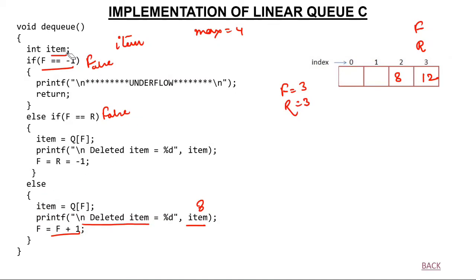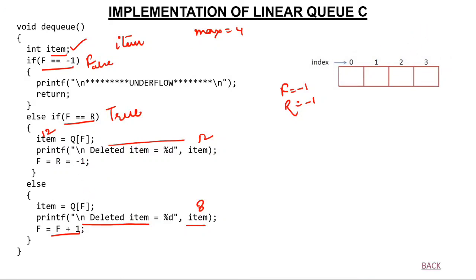Pressing 2 again: front is not minus 1. Now front equals rear — both are 3 — meaning only one element is left. Item gets Q[3] = 12; printed. Since it was the last element, both front and rear are reset to minus 1. Pressing 2 once more: front is now minus 1, condition is true — we print 'underflow: no element to be deleted' and return.